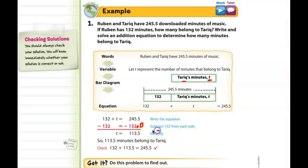Always simplify. You can check it by adding 132 plus 113.5 and you'll find that that is the correct answer. So now we are going to do an example to see if we understand the subtraction property of equality.